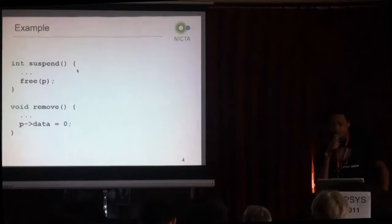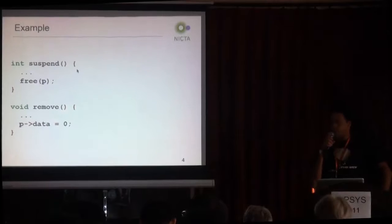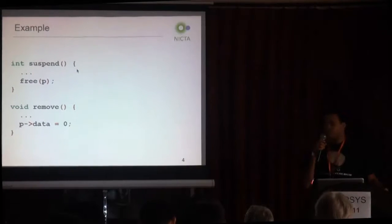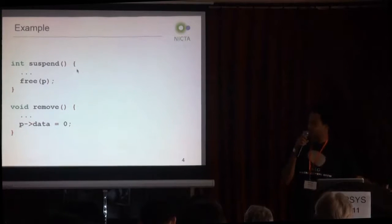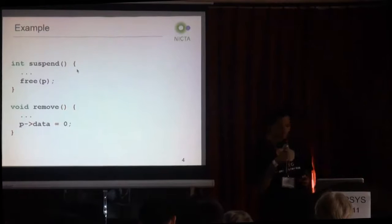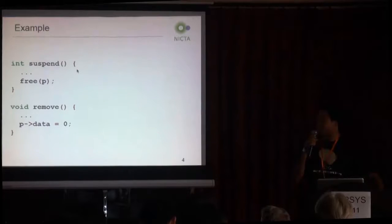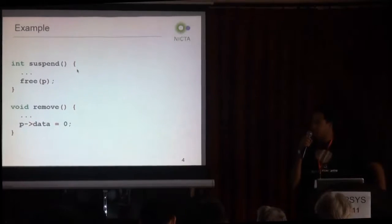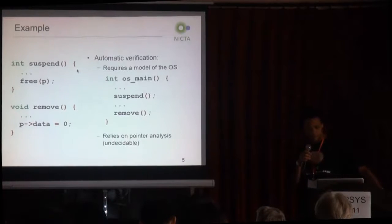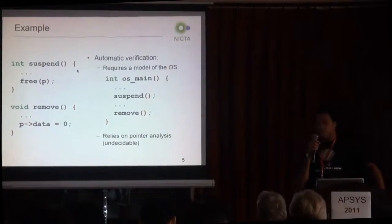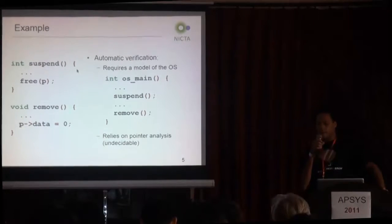In current driver architecture, a driver is a collection of callbacks which get invoked by the operating system in a specific order, and each of these callbacks corresponds to an operating system request. This is a typical example of a use-after-free bug. If we want to automatically verify this code and find this bug, we need to provide to the modern checker a model of the operating system behavior.